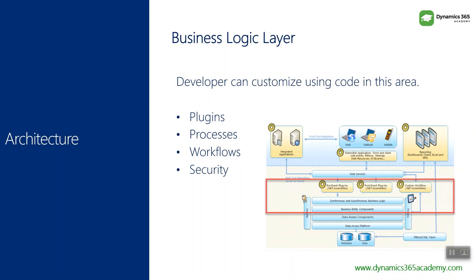The next layer is the business logic layer — this is where the business logic resides. In this area we have pre-event plugins, which are .NET assemblies, post-event plugins, and custom workflow activities. By default in your CRM organization there are many processes such as plugins, workflows, business process flows, and so on. Workflows and business process flows can be created with the help of UI tools. We also have processes such as plugins — by default there are many plugins active in the system that form the logic of the application.